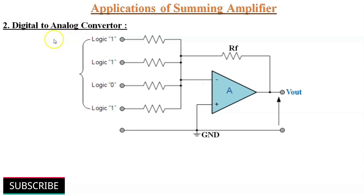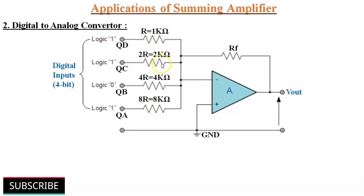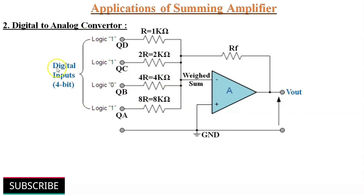Another useful application of the summing amplifier is the digital-to-analog converter. If the input resistors of the summing amplifier double in value for each input — like R, 2R, 4R and 8R — then a digital logic voltage, either logic level 1 or logic level 0 on these inputs, will produce an output which is the weighted sum of the digital inputs. Here 4 bits will determine the output analog voltage, and the accuracy of the converter depends on the accuracy of the input voltage levels and the input resistance values.